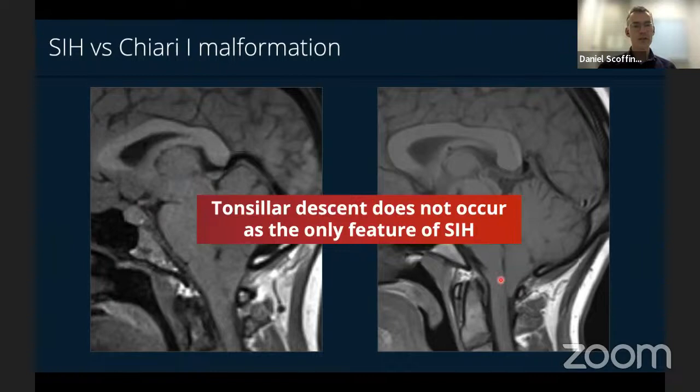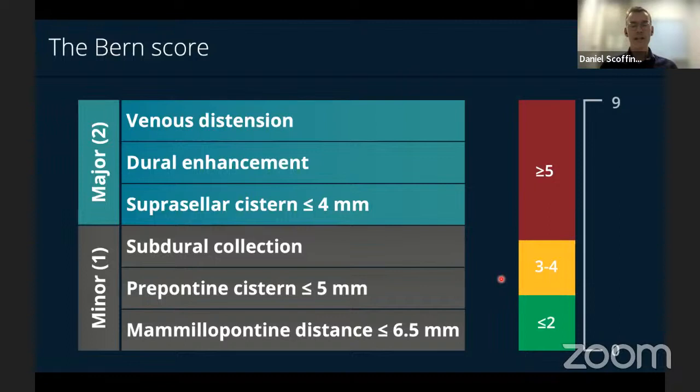All of these findings have been synthesized by Professor Beck and colleagues into what's known as the Bern score, ranging from zero to nine, with six criteria — three major worth two points and three minor worth one point. Tallying these measurements and qualitative findings gives a score that stratifies patients into low, intermediate, and high probability of finding a CSF leak at myelography. You can still find leaks in patients with a score of zero, but it's much less likely. This score can also be useful as a semi-quantitative assessment of treatment response.